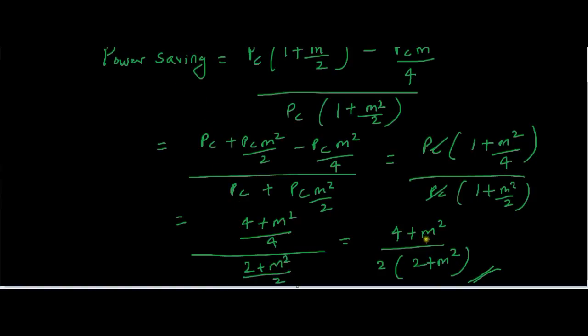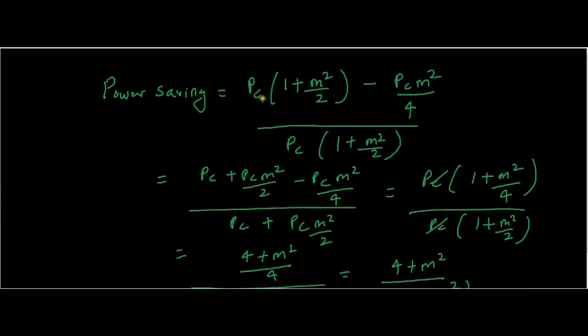Where m is modulation index. So if you substitute m = 0.5, that is if your modulation index is 0.5, you will get the required power saving for SSB modulation. Note that we have used total power as PC(1 + m²/2), which is the same as the total power of AM modulation.